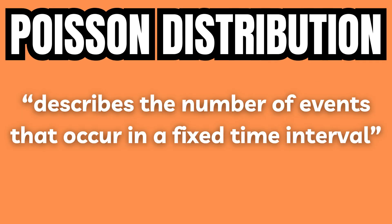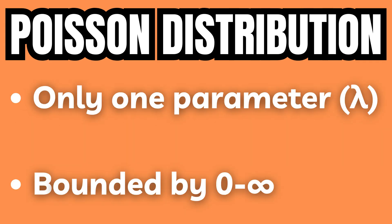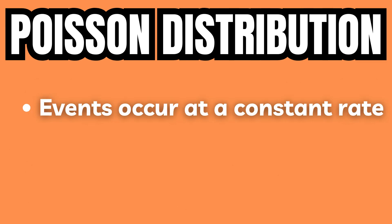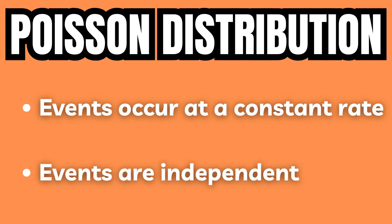The Poisson distribution is a discrete distribution which describes the number of events that occur in a fixed time interval. The Poisson distribution requires only one parameter, lambda, and is bounded by zero and infinity. Furthermore, the Poisson distribution assumes that events take place at a constant rate and that events are independent, meaning that any one event does not affect the probability of a subsequent event taking place.